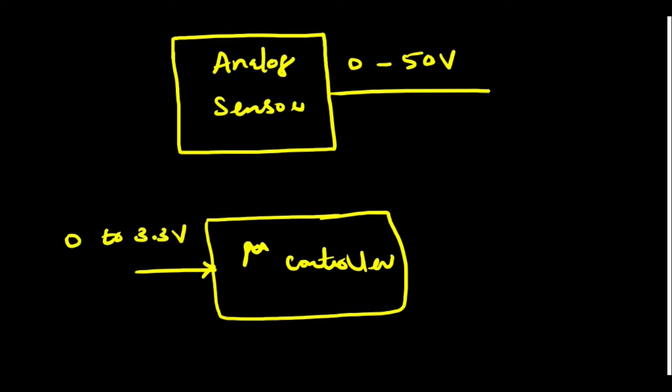We want a conversion from 0 to 5V to 0 to 3.3V. So, it is a continuous variation, it is not just a level. How do you do that?